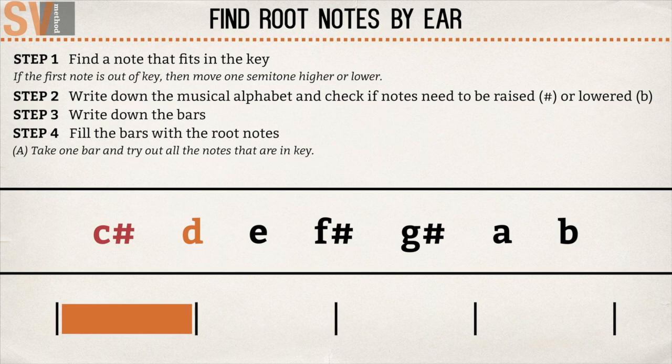D, E, F sharp. We now know that F sharp is the root note on the first bar. We write it down.